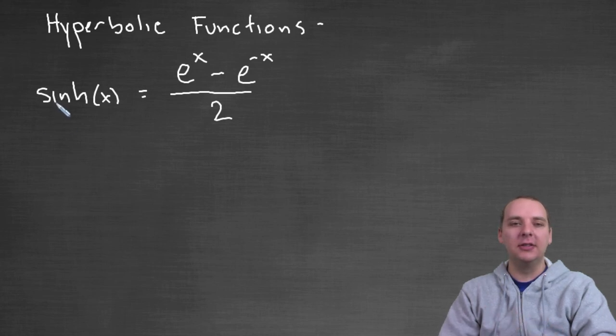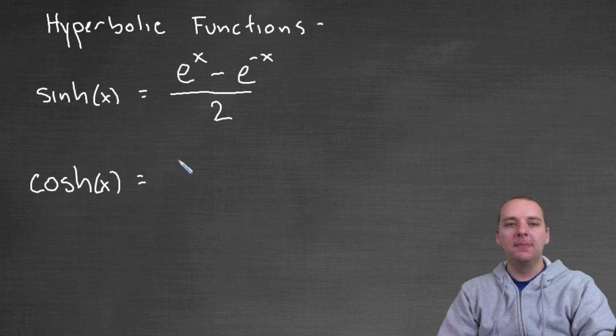We'll talk about why they're written in terms of trig functions, or like trig functions in just a second. The hyperbolic cosine function, so hyperbolic cosine looks like this, e to the x plus e to the negative x, all over two, okay?